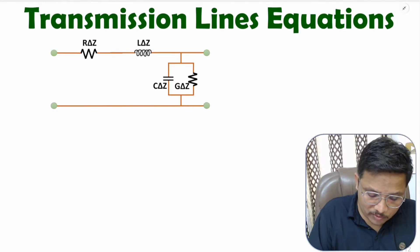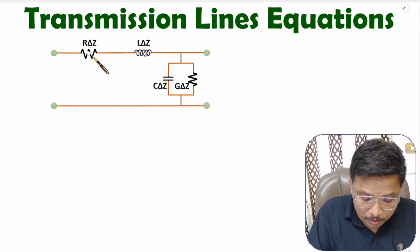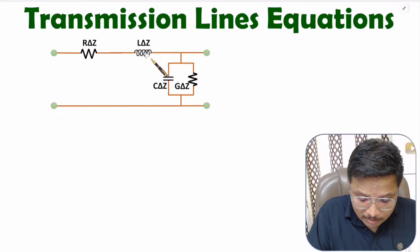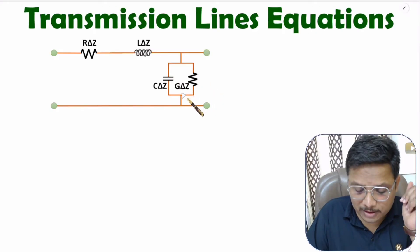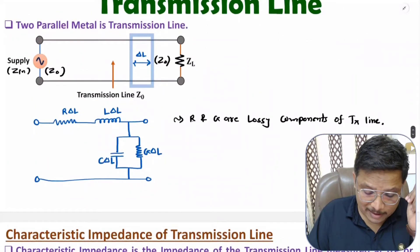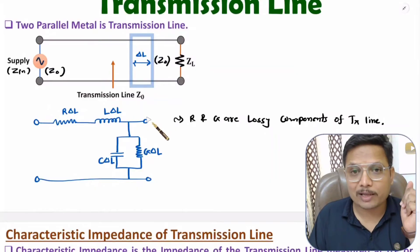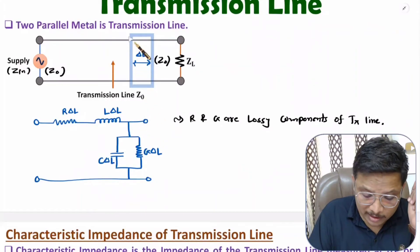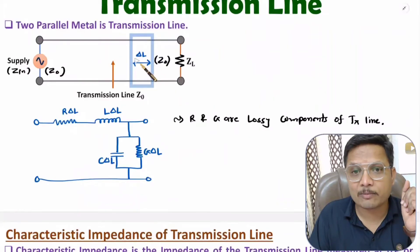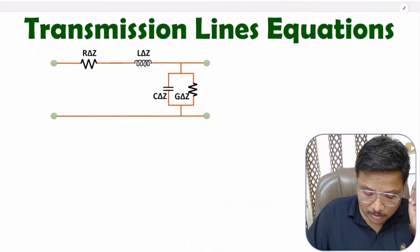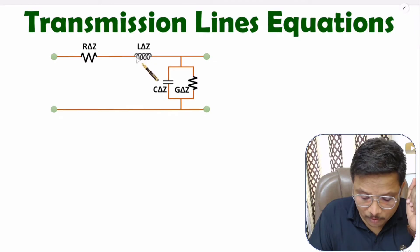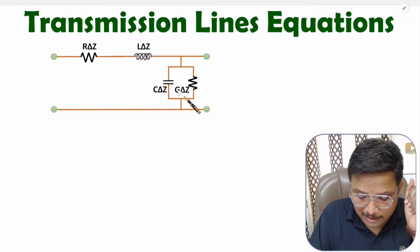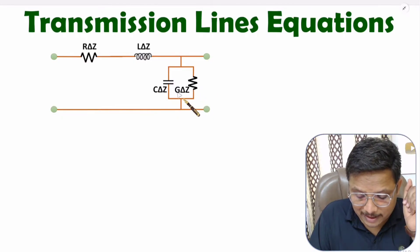Here you can observe that the transmission line equivalent circuit has four components: a resistive component, an inductive component, a capacitive component, and a transconductive component. I am considering a small differential length as delta Z. So we have the resistive element R·ΔZ, the inductive element L·ΔZ, the capacitive element C·ΔZ, and the transconductive element G·ΔZ.